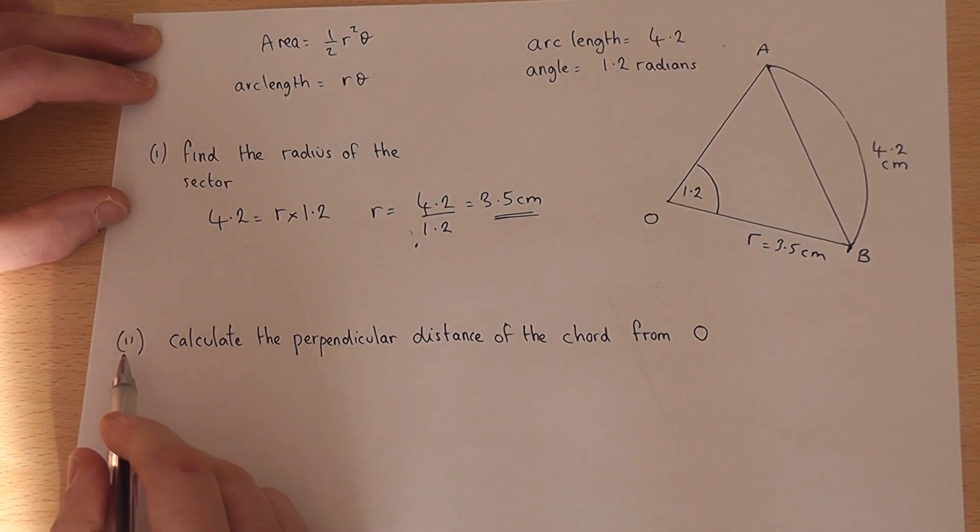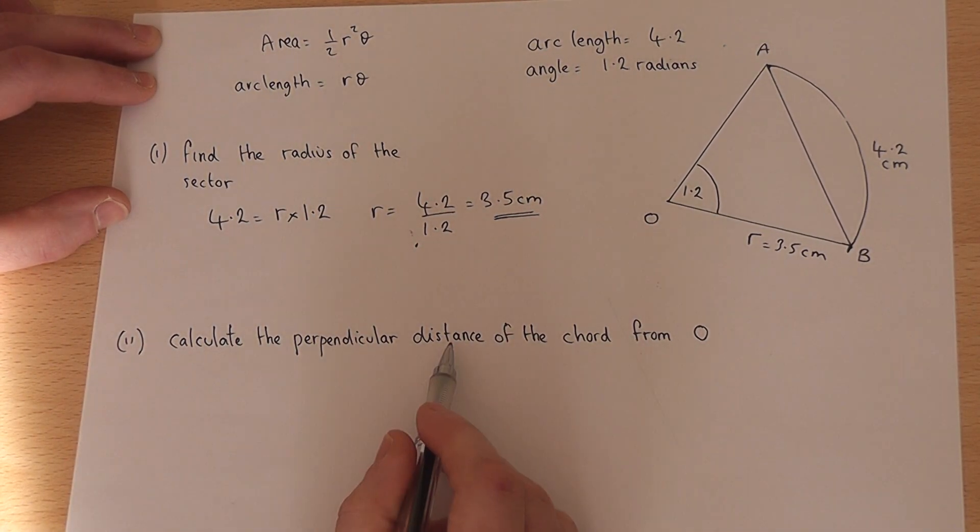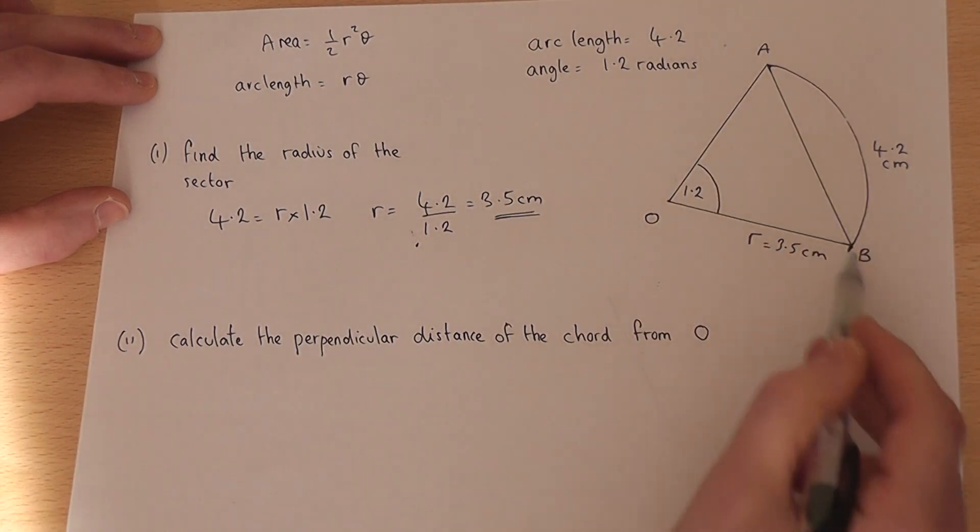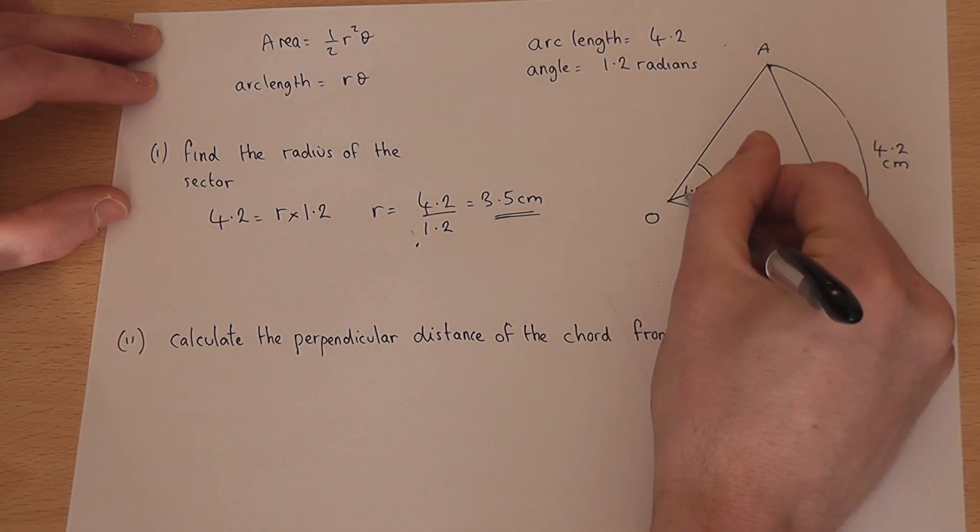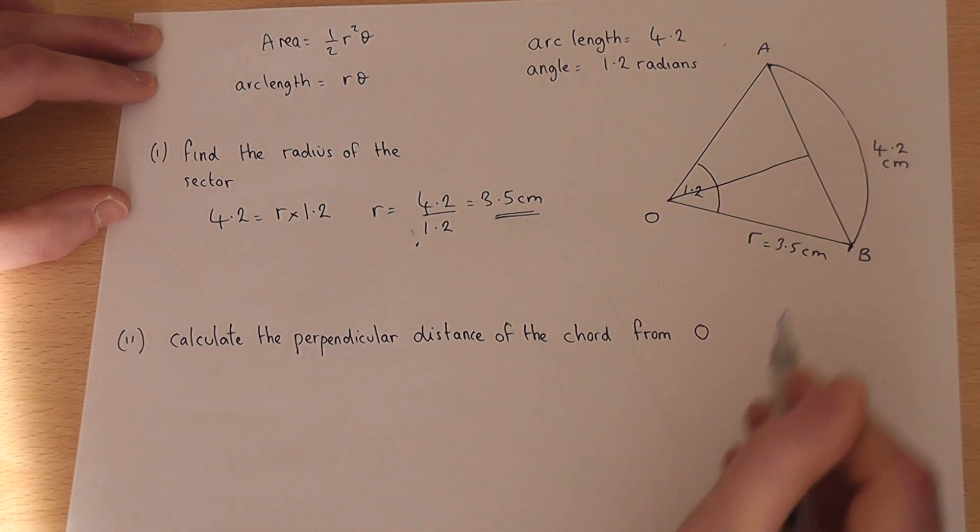In part two we're then asked to find the perpendicular distance of the chord AB from O. So if I were to cut through the centre, i.e. bisect this angle,